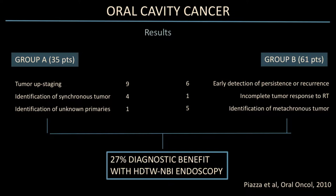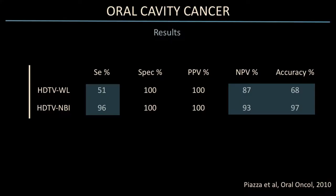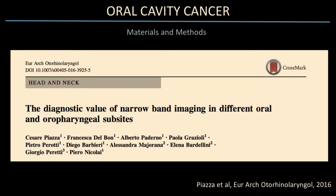In both groups, we achieved a 27% diagnostic benefit using high-definition combined with NBI endoscopy — rigid endoscopy for the oral cavity and flexible video endoscopy for the oropharynx. In the staging group, the benefit was in upstaging, identification of synchronous tumors, and identification of unknown primaries. In the follow-up group, we identified persistent or recurrent disease after radiotherapy and metacronous tumors.